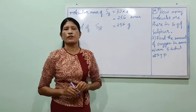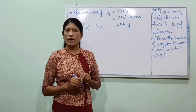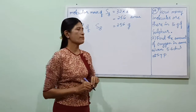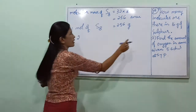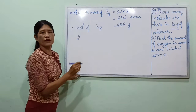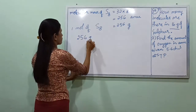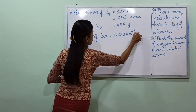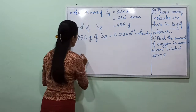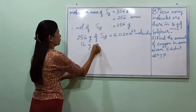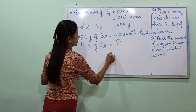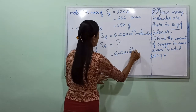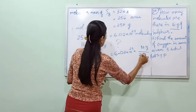Using Avogadro's number 6.02×10²³ molecules per mole: for 16 grams of S₈ (molar mass 256 g/mol), number of molecules equals 6.02×10²³ multiplied by 16 grams divided by 256 grams.